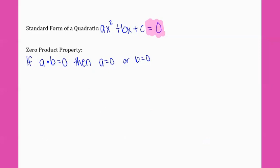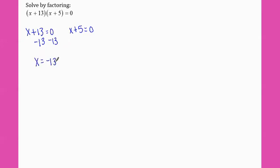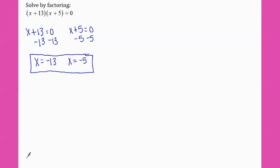So let's look at some examples. We have x plus thirteen times x plus five equals zero. Think of this as our a and this as our b. Either x plus thirteen equals zero or x plus five equals zero. We can solve for x: subtract thirteen — x equals negative thirteen — or subtract five — x equals negative five.